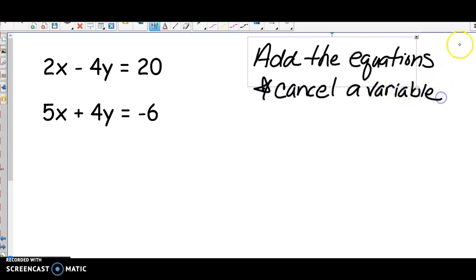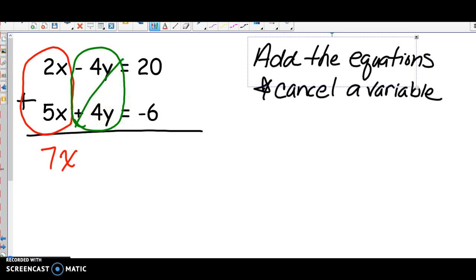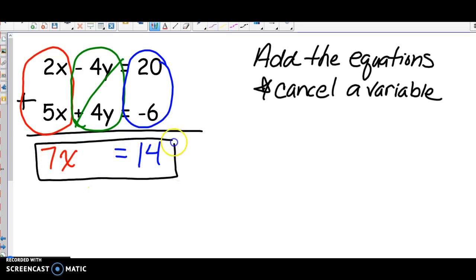The same thing happens where you have to add like terms. I have these written right above each other. I'm going to set up an addition problem and just add. 2x plus 5x is 7x. Then I'm going to add my y's, making sure you take the sign with the number. Negative 4y plus positive 4y cancels, so that's 0. And then 20 plus negative 6 is 14. Here's my new equation. You can easily say that x equals 2 by dividing both sides by 7.